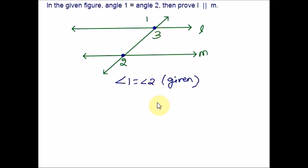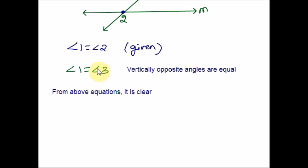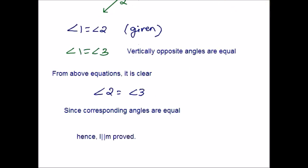Angle 1 and angle 3 are vertically opposite angles — they share a common point and common ray. Vertically opposite angles are equal, so angle 1 equals angle 3. We now have two equations: angle 1 = angle 2, and angle 1 = angle 3. Since the left-hand sides are the same, we can equate the right-hand sides: angle 3 equals angle 2. Since angles 2 and 3 are corresponding angles and they are equal, lines L and M are parallel.